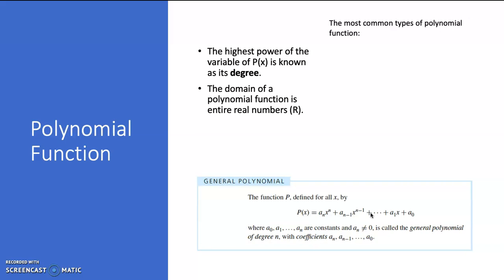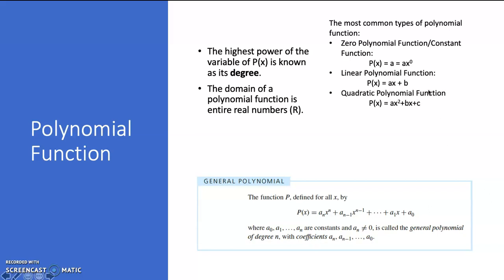Now here are the most common types of polynomial function that we mostly encounter. We have a constant function or a zero polynomial function, a linear polynomial function or a degree 1 polynomial function, a quadratic polynomial function with highest degree 2, so it's a degree 2 function, and cubic polynomial function with highest degree 3, so it's a degree 3 polynomial function.